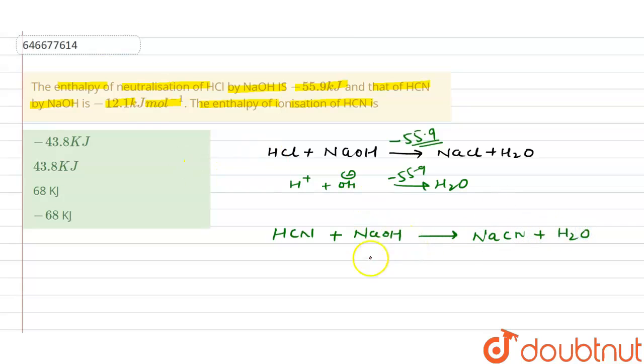Because here this HCN will not completely break, so we have to break the HCN and to break the HCN we need some kind of energy, and that is called enthalpy of ionization. That is what this question is asking. Now here that value is given as minus 12.1.